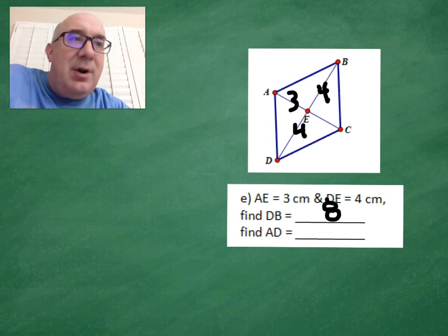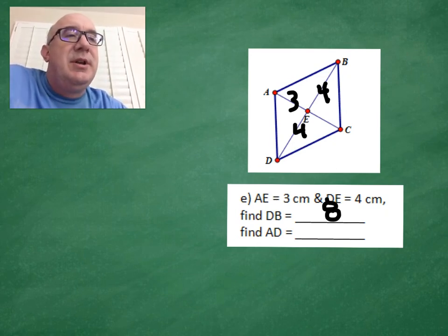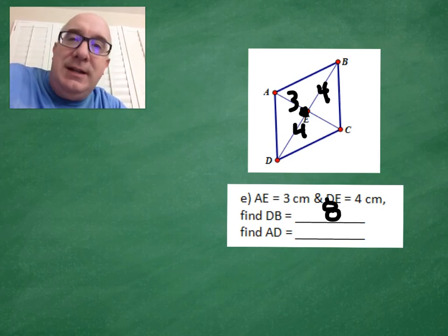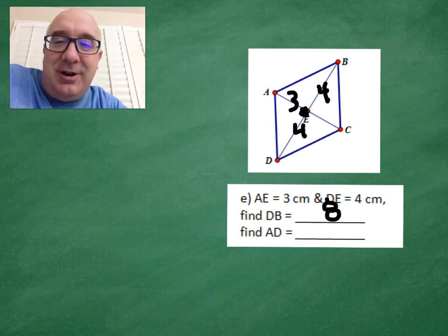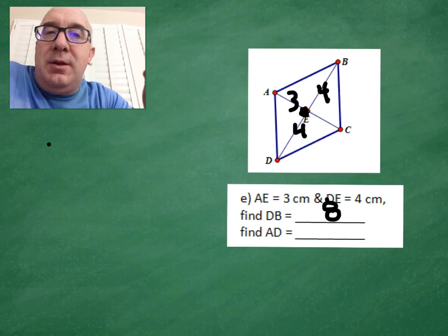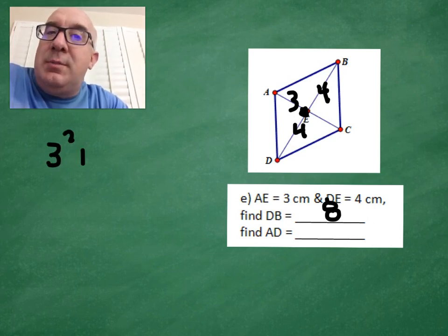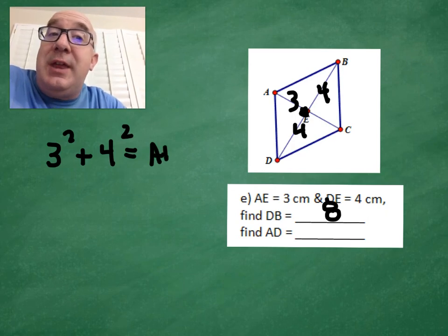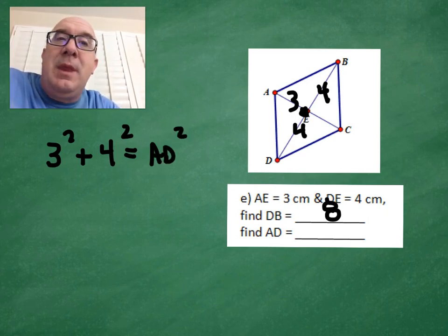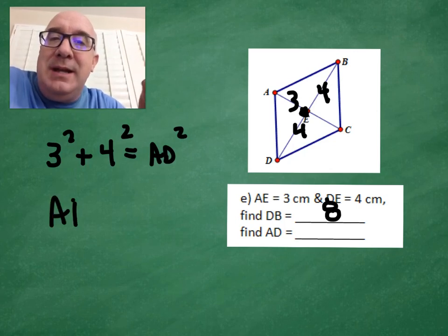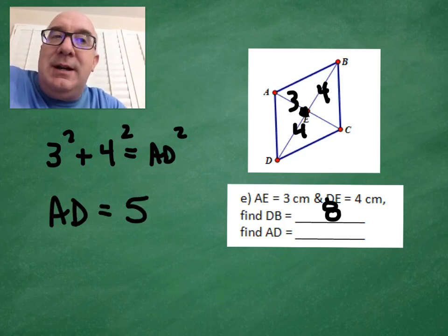The next one's a little trickier — it's the side of the rhombus. One of the properties is that the diagonals bisect each other perpendicularly. So three squared plus four squared equals AD squared, giving you the classic three-four-five answer. It's always tricky the first time.